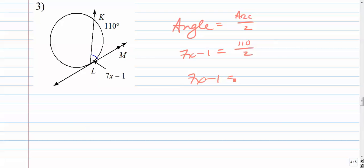7x minus 1 is equal to, 110 over 2 is 55. 7x equals 56. x is 8.